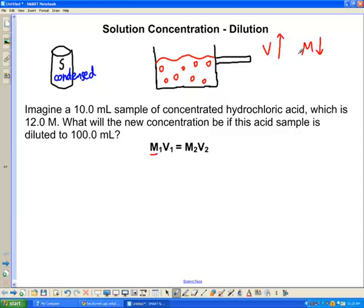If we were to think about the other way and we were to concentrate something, if we were to decrease our volume, the amount of stuff in there wouldn't change. Those pieces of stuff, whatever they are, would just become closer together so it would become more concentrated. So the important thing is, whatever you do to the volume, the opposite happens to the concentration.